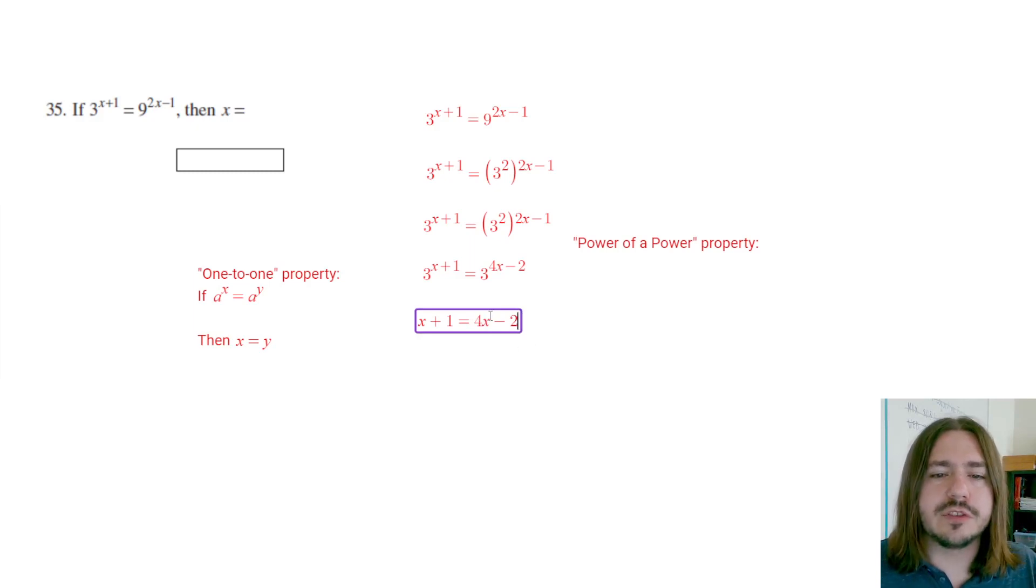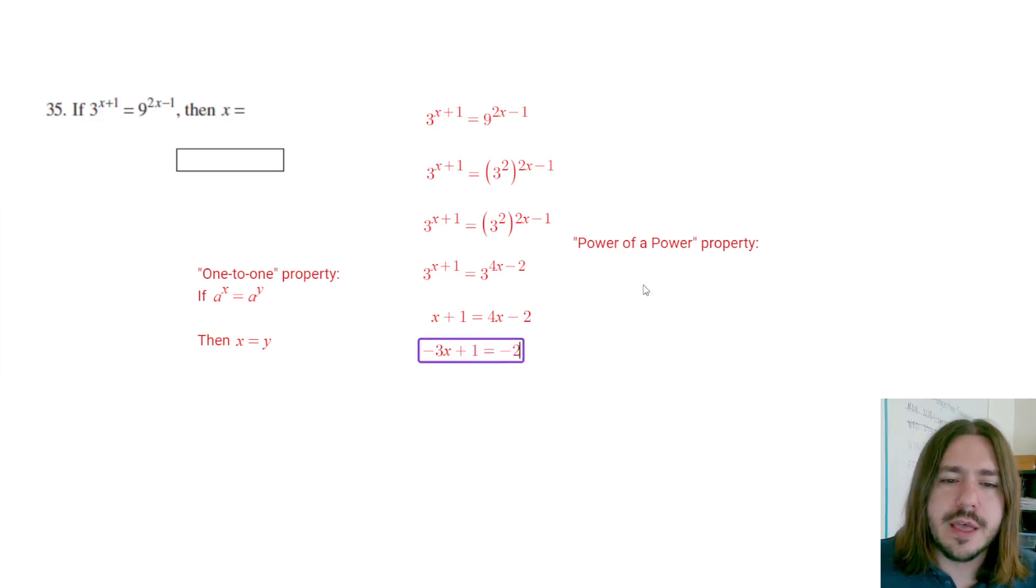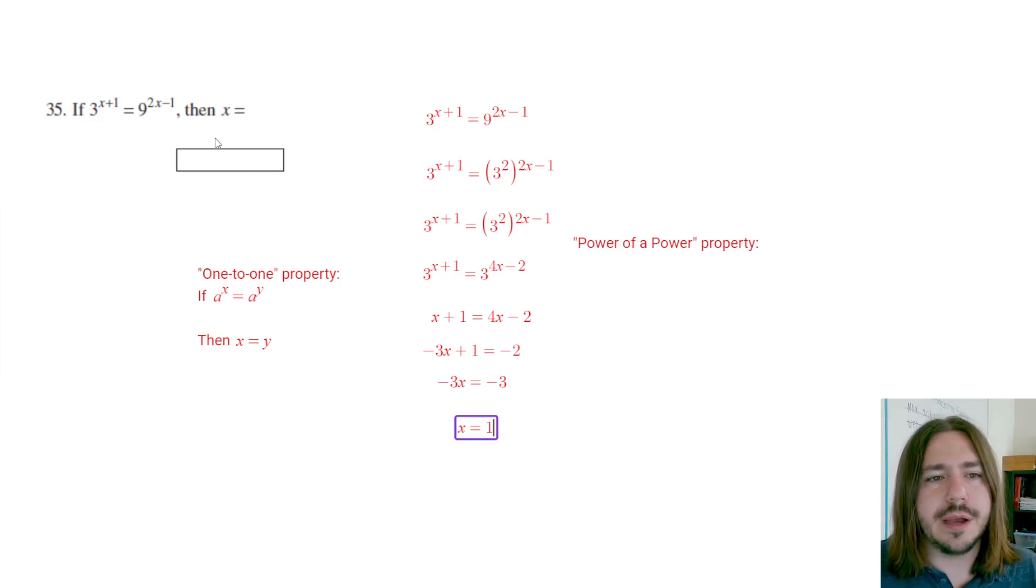So I'm going to subtract 4x from both sides. That's going to give me negative 3x plus 1 equals negative 2. Then I'm going to subtract 1 from both sides. That's going to give me negative 3x equals negative 3. And finally, I'm going to divide both sides by negative 3, which gives me x equals 1. And that's going to be my solution here.